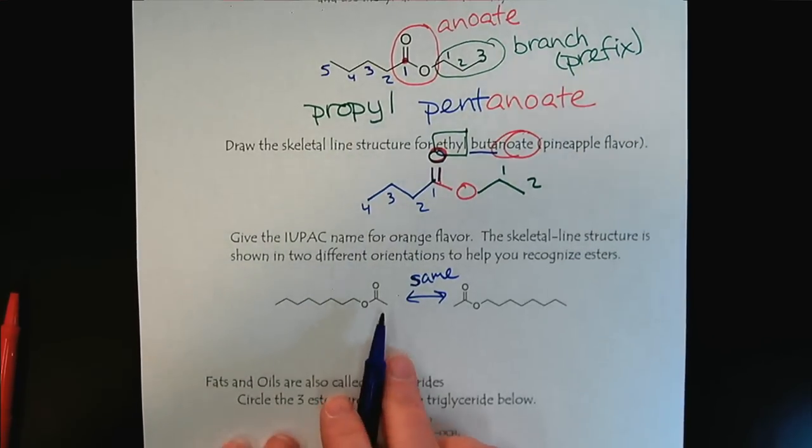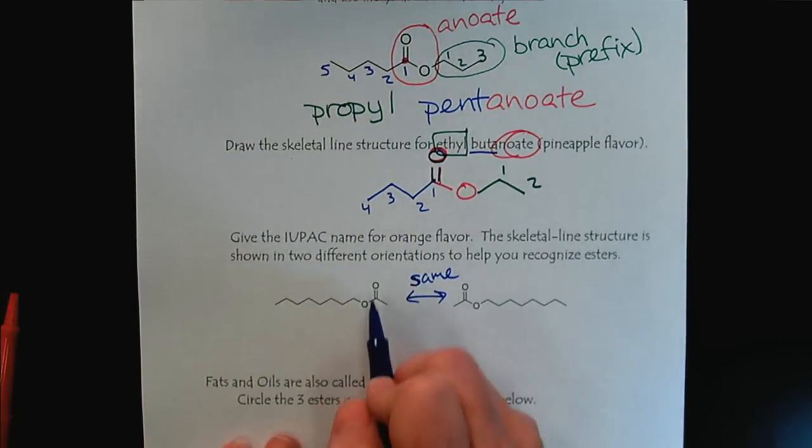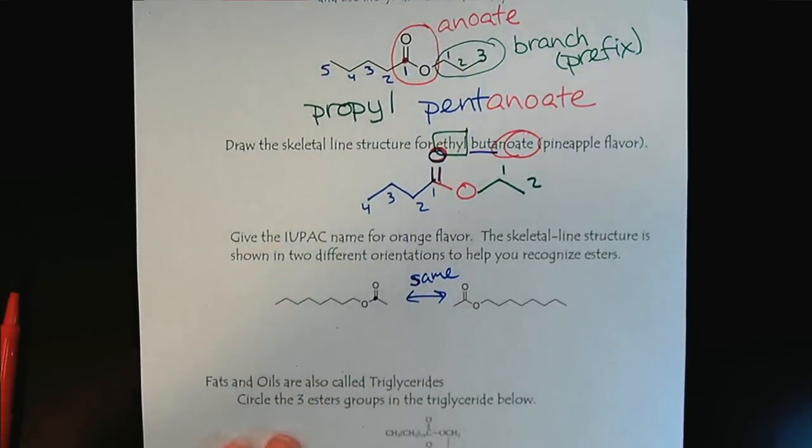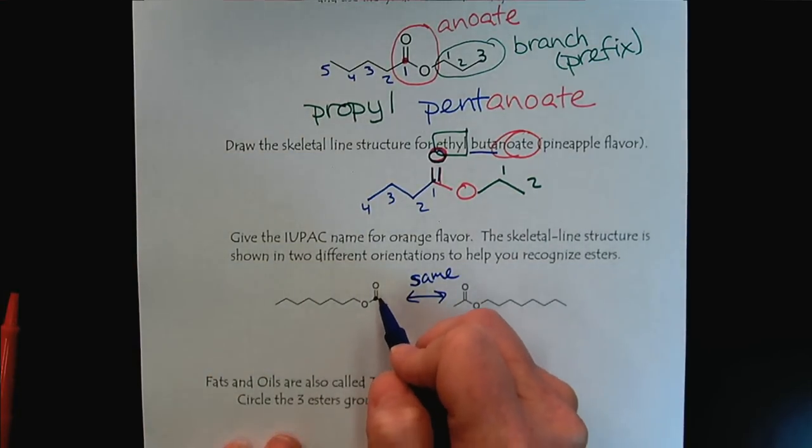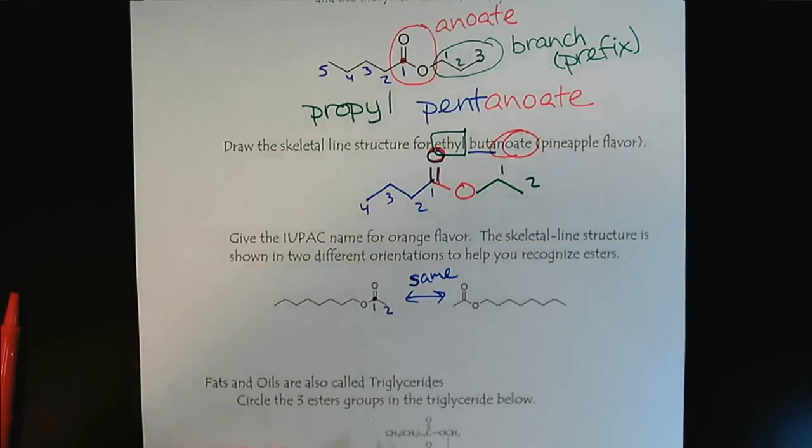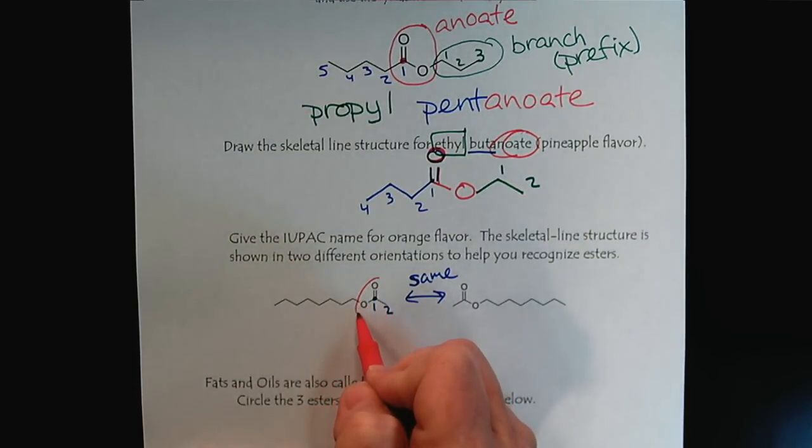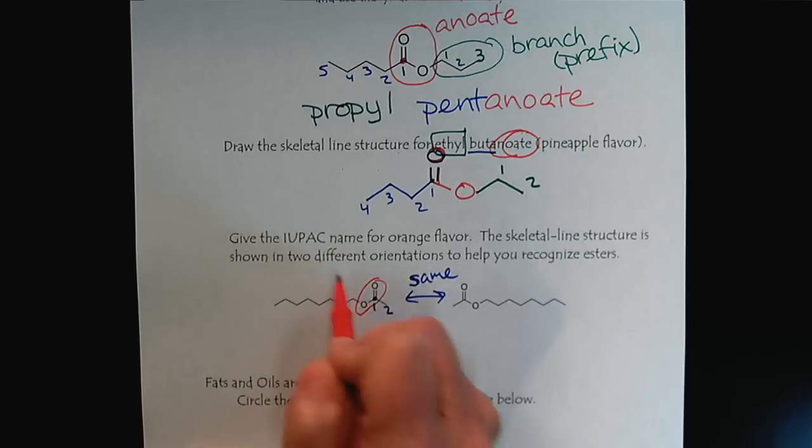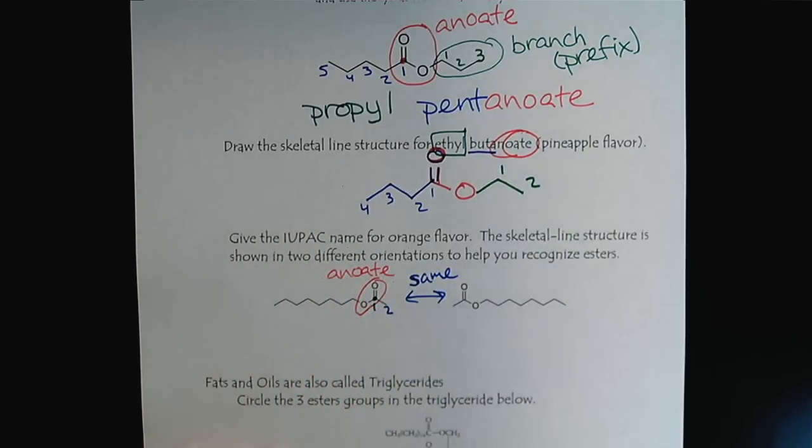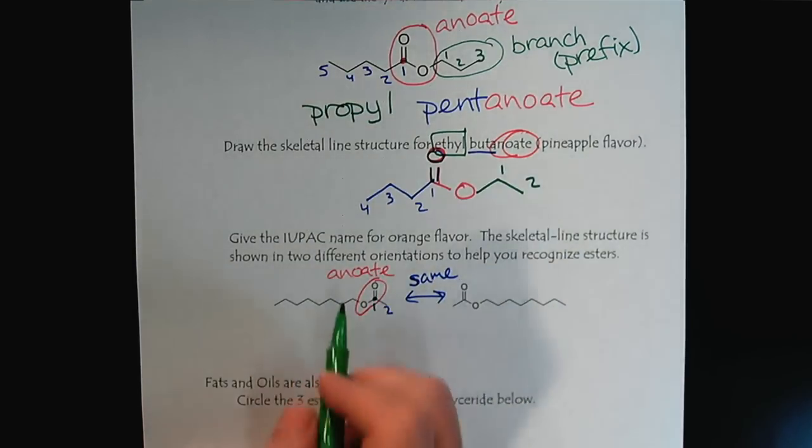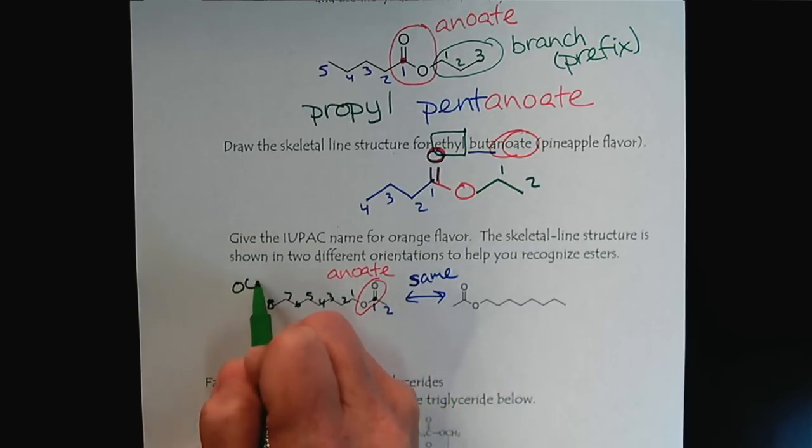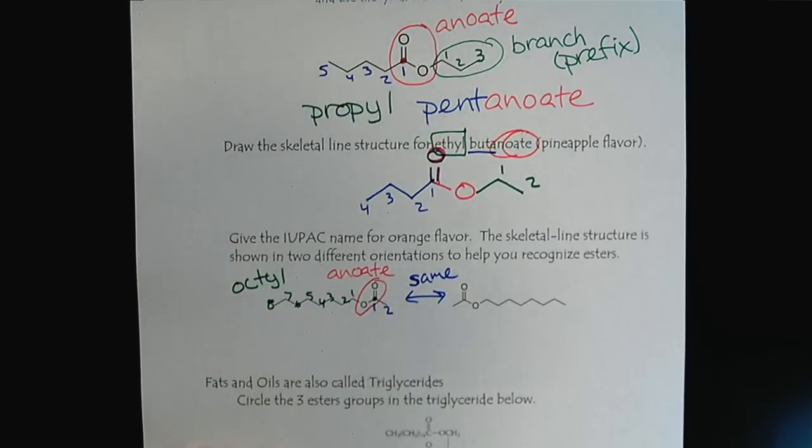Whenever we're looking at carbonyl compounds, we're always going to focus our attention on the carbonyl carbon. And this is going to give us our parent, one, two. And that, and then here, this tells us anoate as the ester. And then we count this, one, two, three, four, five, six, seven, eight. So, there's our octal group. So, now we can put all the pieces together.